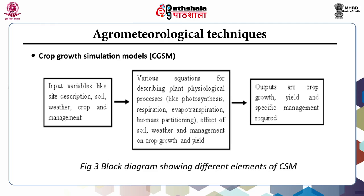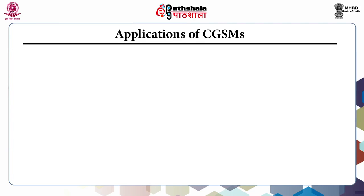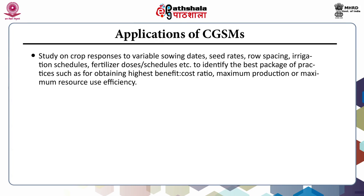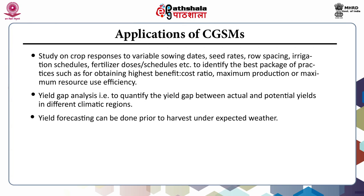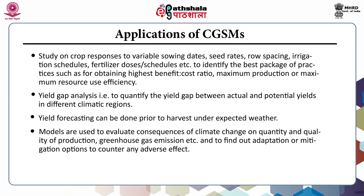Applications of CGSMs include: studying crop responses to variable sowing dates, seed rates, row spacing, irrigation schedules, and fertilizer doses or schedules; identifying the best package of practices for highest benefit-cost ratio, maximum production, or maximum resource use efficiency; yield gap analysis to quantify the gap between actual and potential yields in different climatic regions; yield forecasting prior to harvest under expected weather; evaluating consequences of climate change on quantity and quality of production and greenhouse gas emissions; and finding adaptation or mitigation options to counter adverse effects. Dynamic CGSMs can also be used as decision support systems as part of agrometeorological advisory systems.